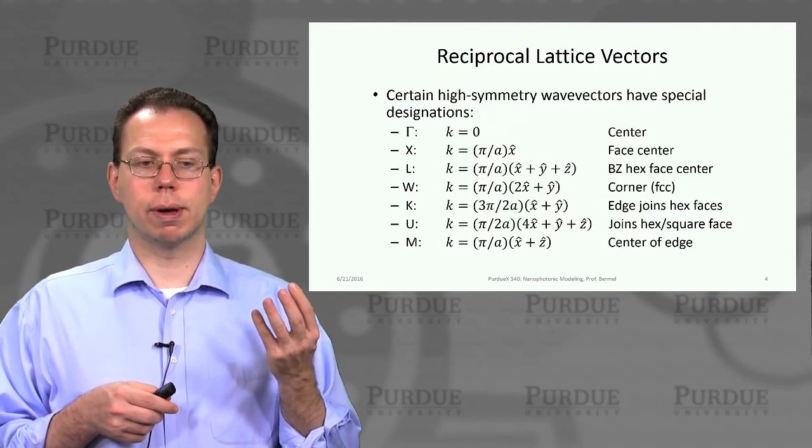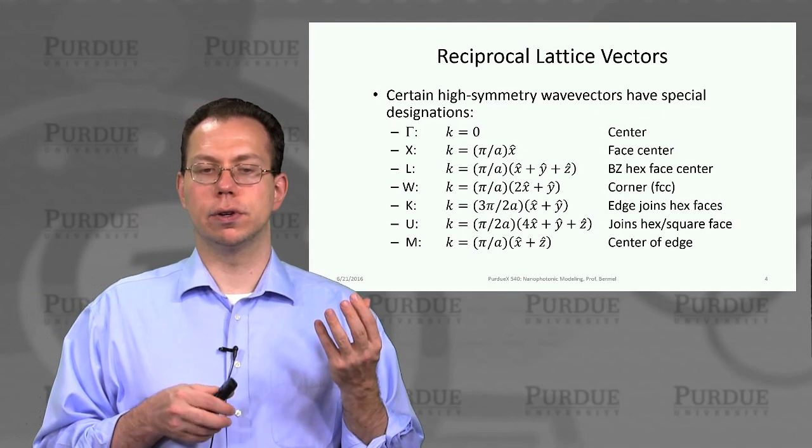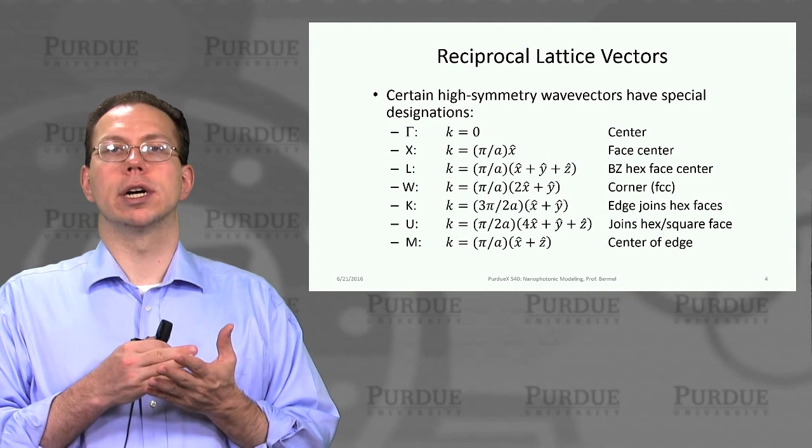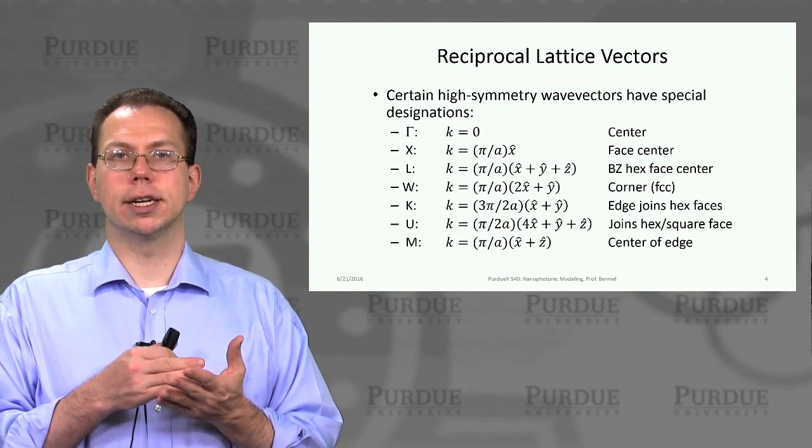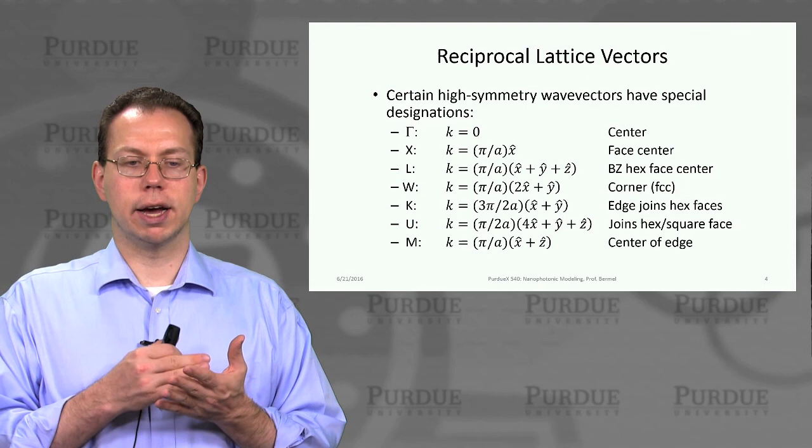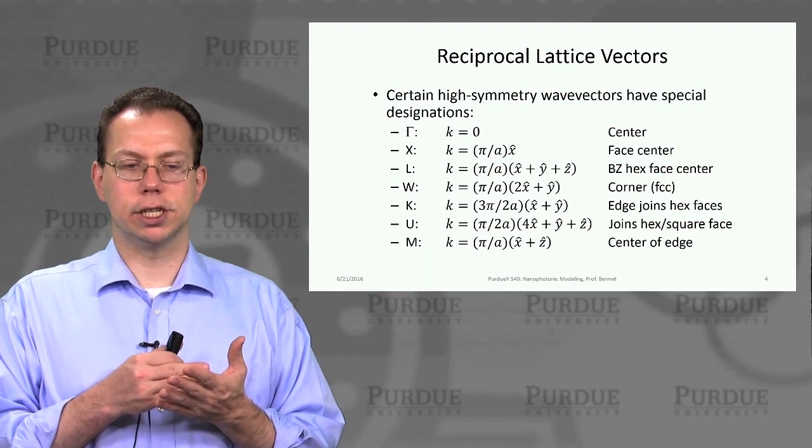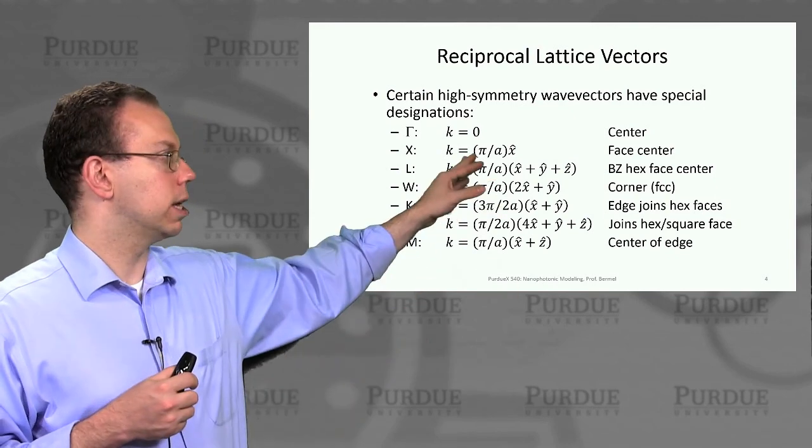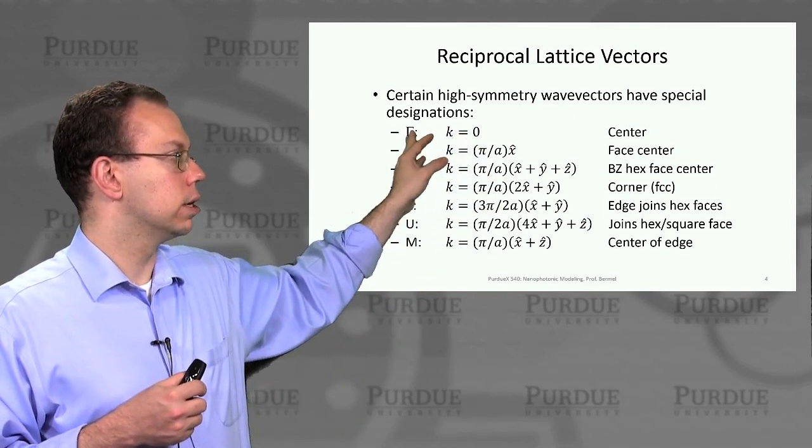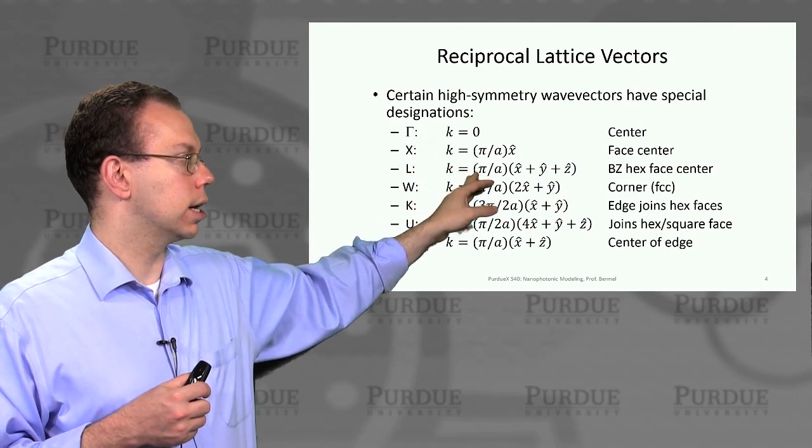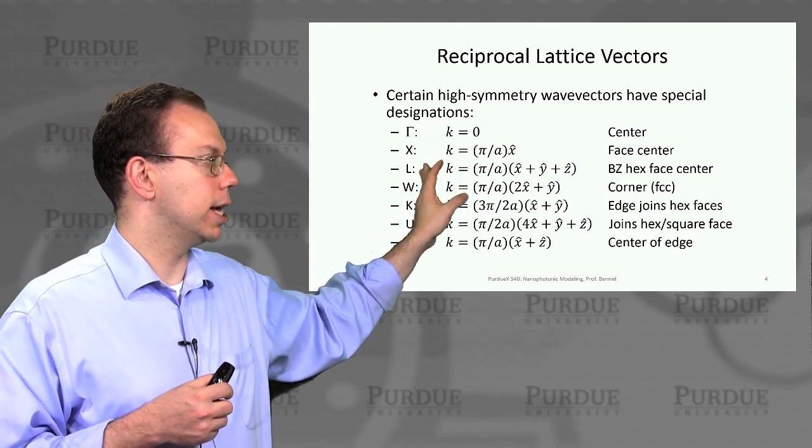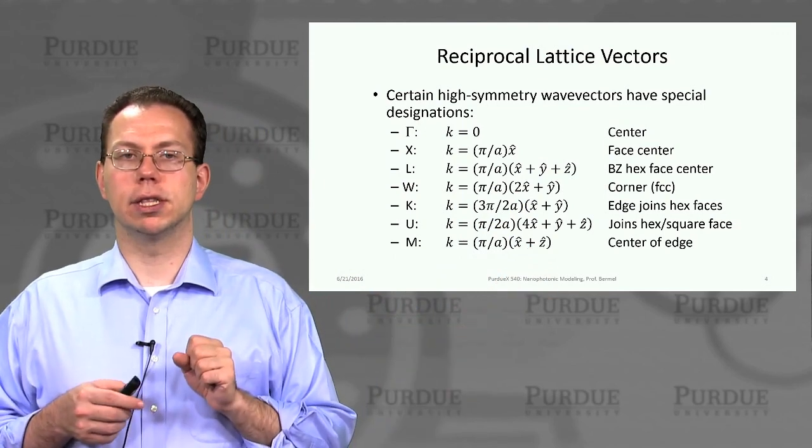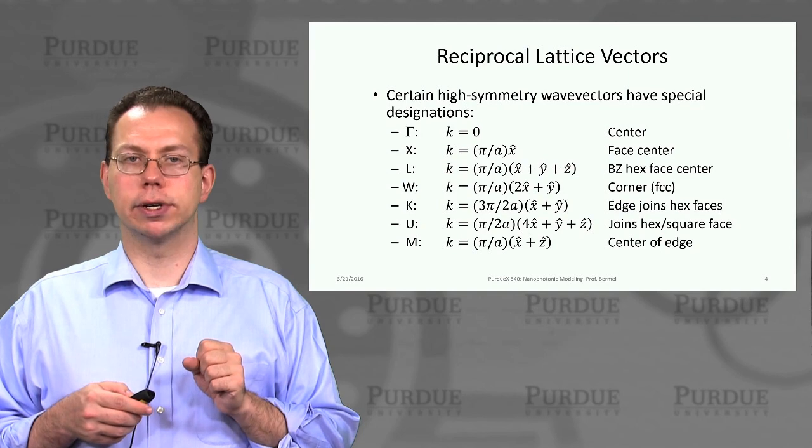Remembering that we need to look at the irreducible zone for a 2D or 3D problem to really understand its behavior, we first define some notation which is the high symmetry wave vector values. At certain K values like K equals zero, we define it to be gamma. K equals pi over A, we define it to be X. You can read those on the PDF if you need to refer back to it.